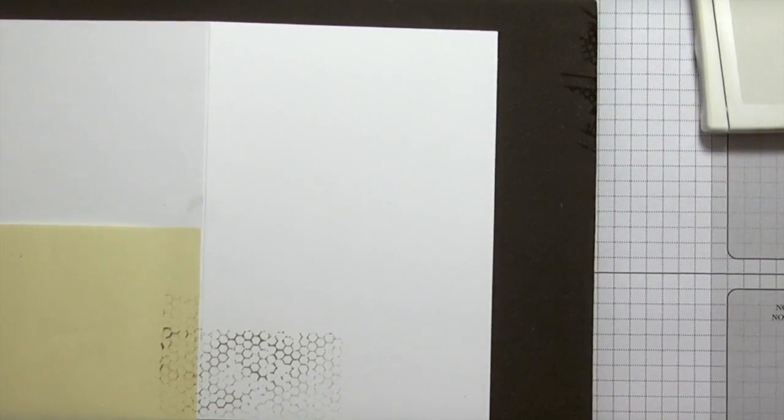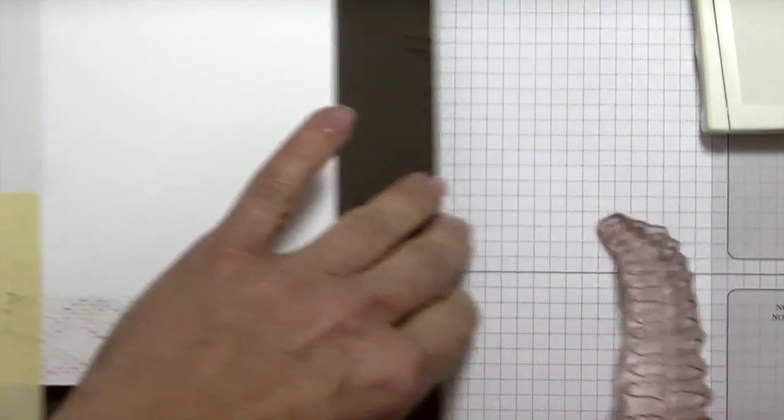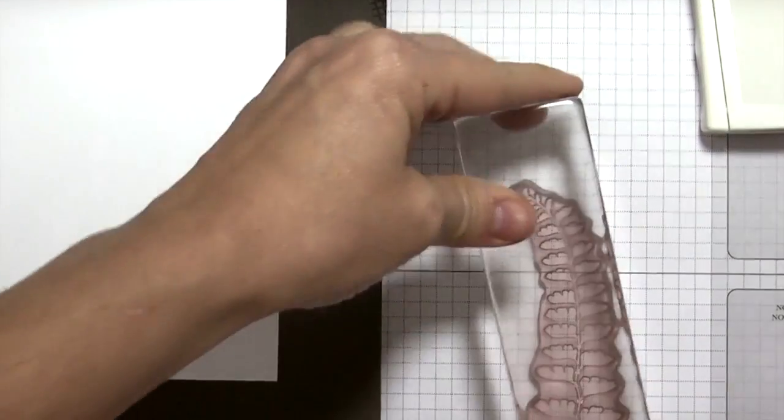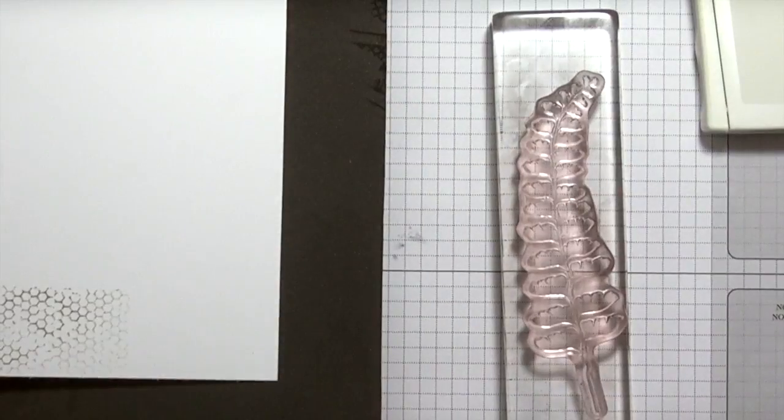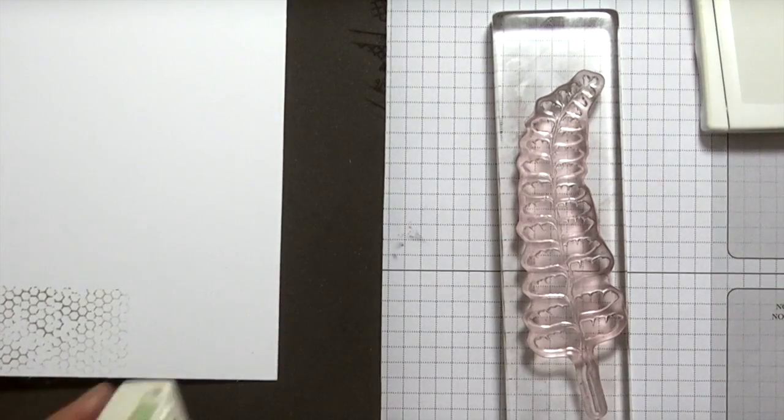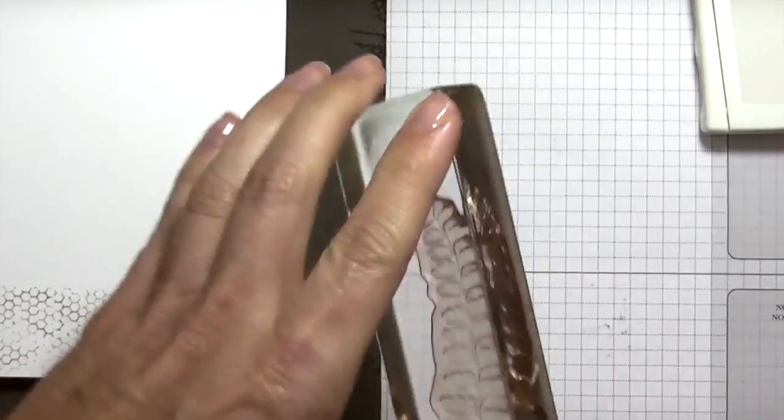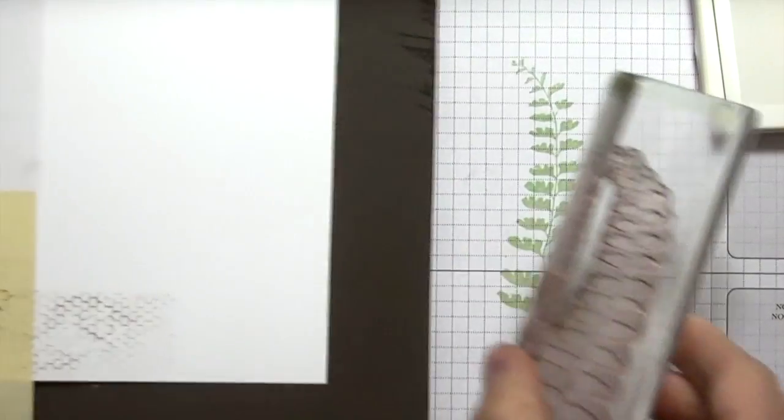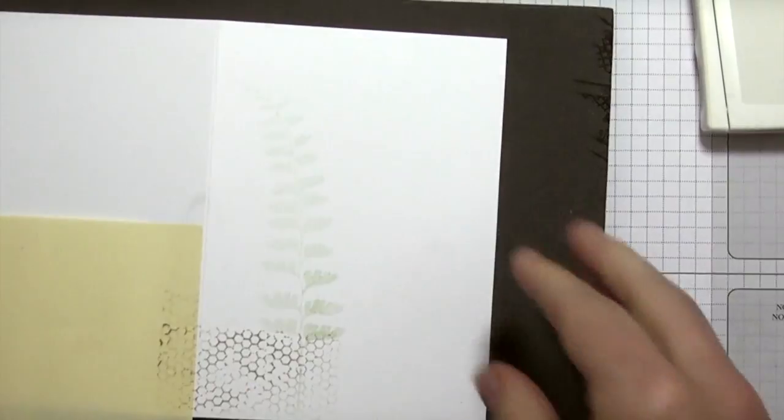The next thing I'm going to do is stamp the vine or the fern kind of pattern. I'm going to put that on a block, and this is going to be stamped in pistachio pudding. Again, I'm going to stamp off once. Just stamp off on my grid mat and then bring that back in here.